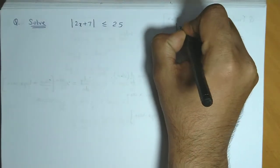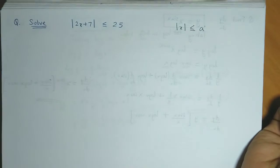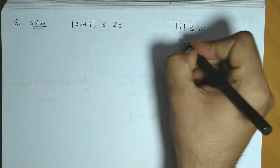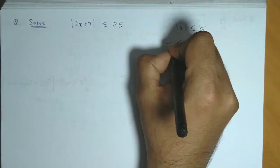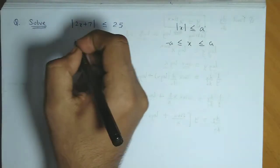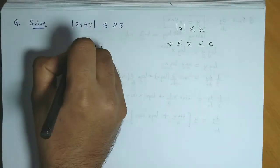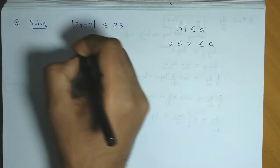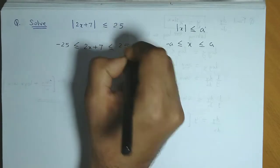Now we know that if mod of x is less than or equal to value a, then x lies between minus a and a. So using this, we obtain 2x plus 7 lies between minus 25 and 25, both inclusive.